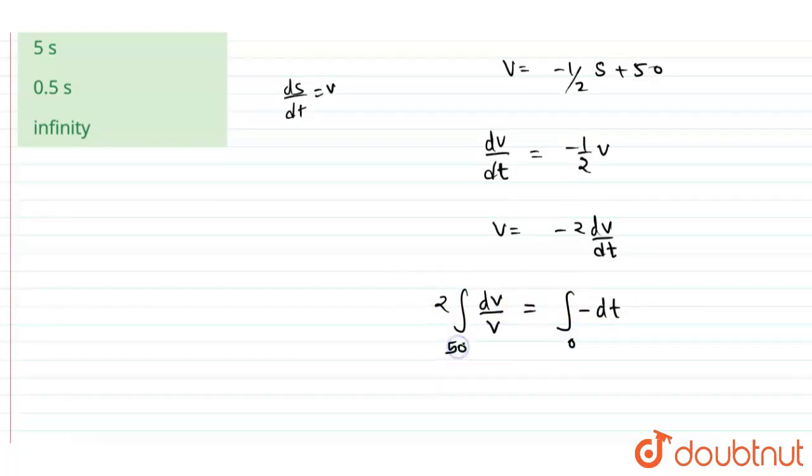So at time zero we have the maximum velocity is 50, then it will start decreasing. When it will reach to x equals 100, its velocity becomes 0, and at that moment we have to find time. So that is what, these are the basic limits of this question.